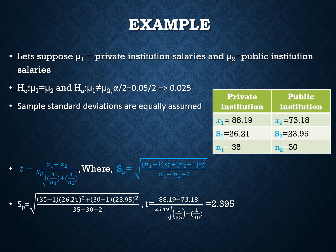By substituting the values into the pooled standard deviation formula, SP equals 25.19. Substituting all values into the t formula, we get T calculated equals 2.395.